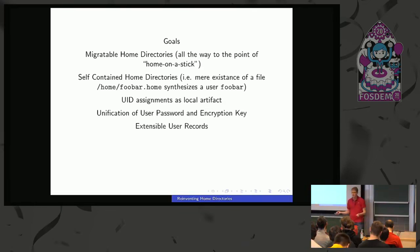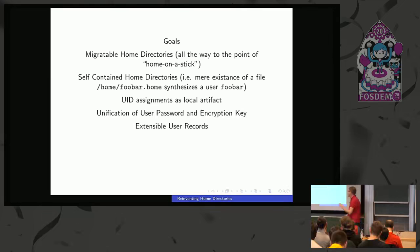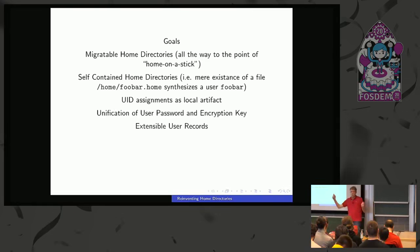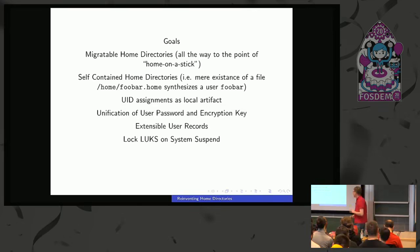A core part of this design is the unification between user password and encryption key. We have the current weird split: a password for full-disk encryption that is the actual encryption key, and then a separate user password. I think this is wrong — it should be the same thing. If I can decrypt a home directory, that IS authentication. Authentication should always be the ability to decrypt the home directory. Also, extensible user records mean anyone can put anything in these records — Samba, Kerberos, whoever.